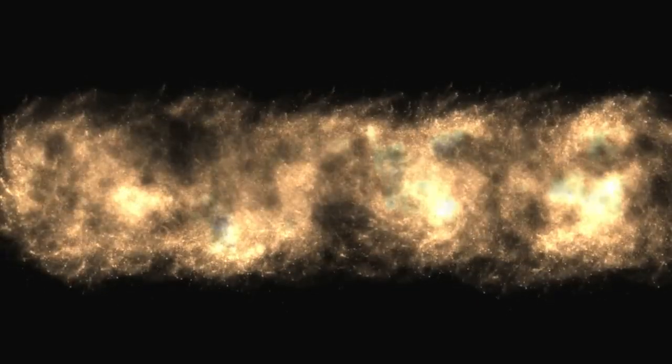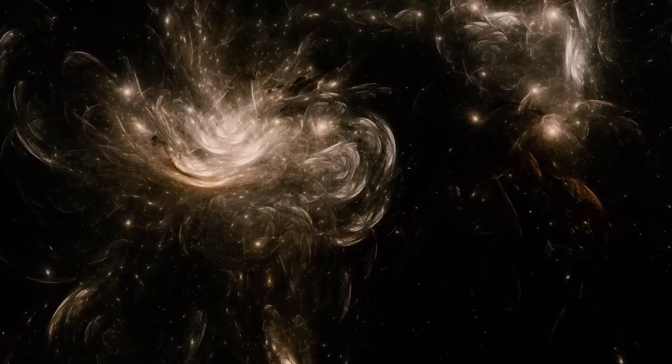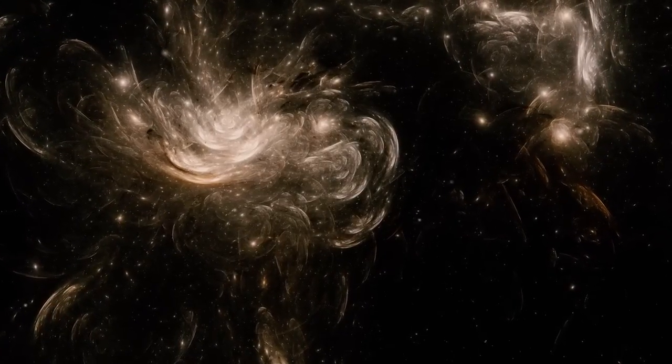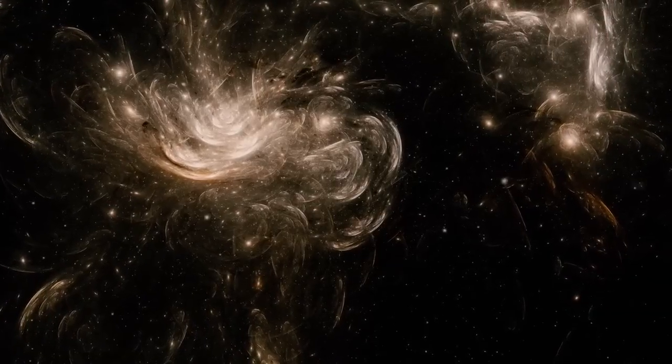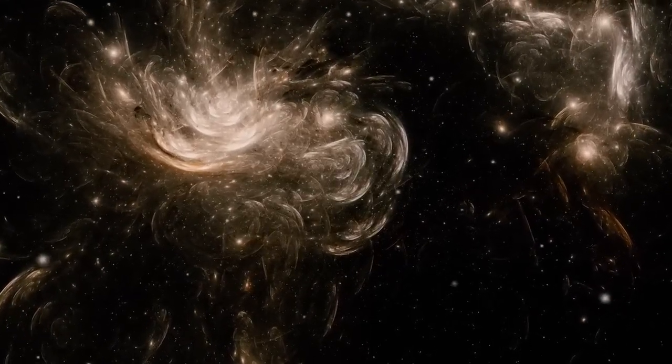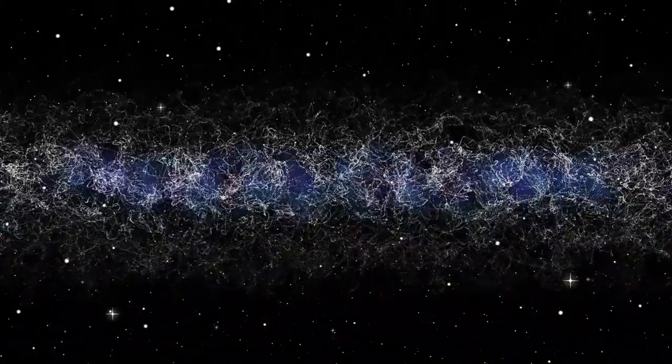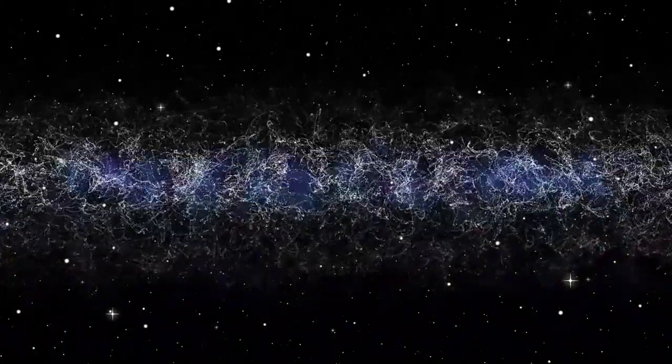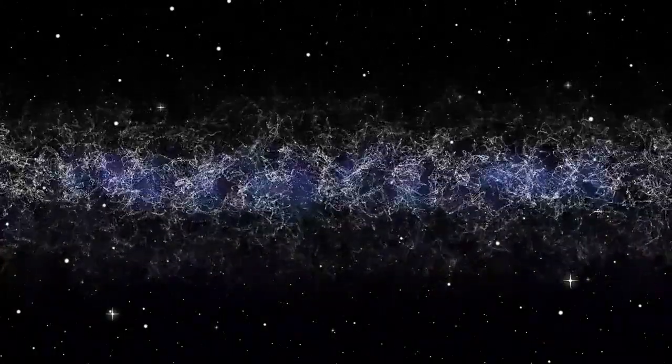To visualize this, imagine if our solar system were reduced to the size of a coin placed on a map of the United States. The entire Milky Way would then span the size of the actual continent. In that vast region, there would be around 300 billion star systems, and we are just one of them, adrift in a sea of unimaginable scale.